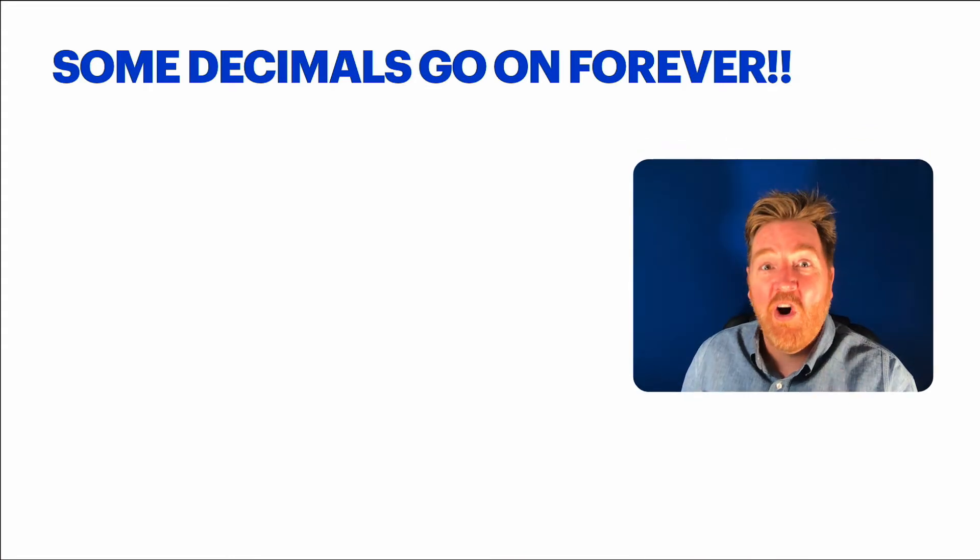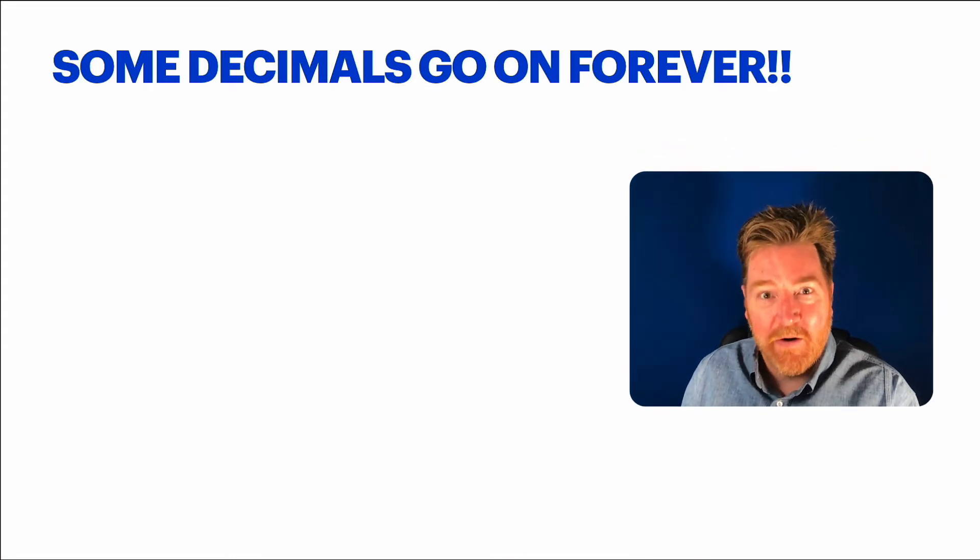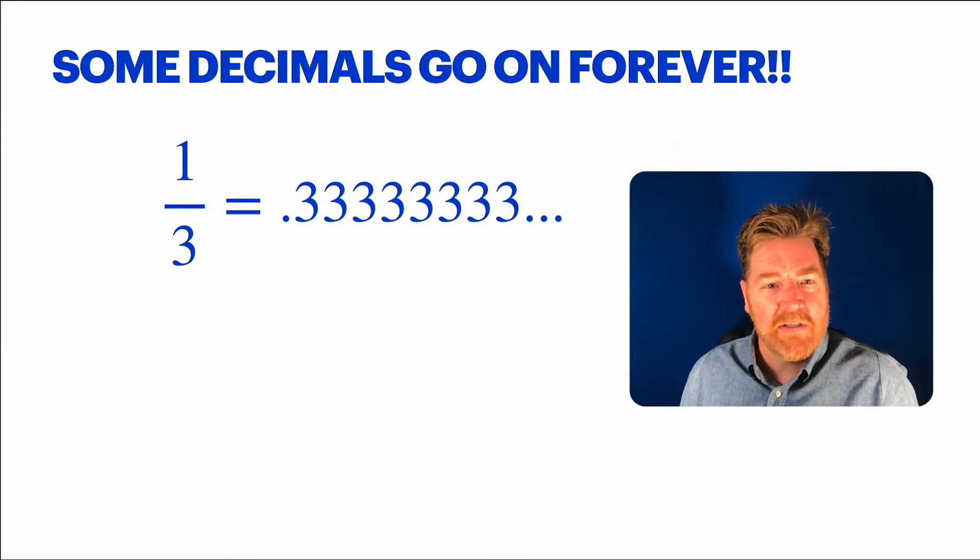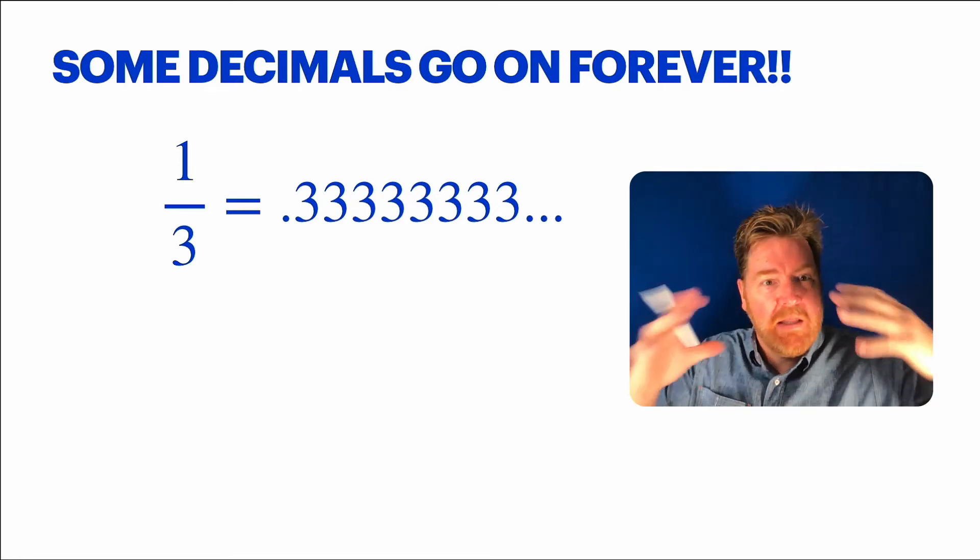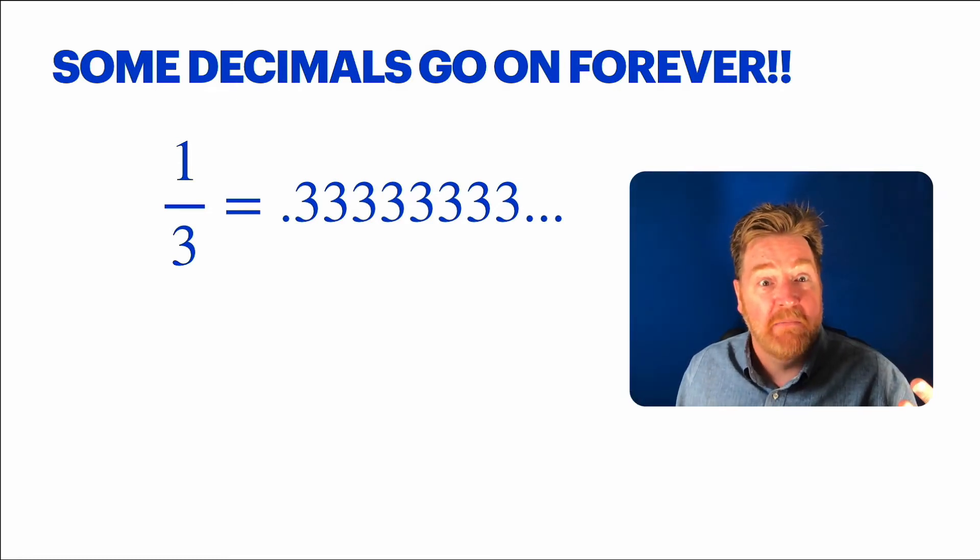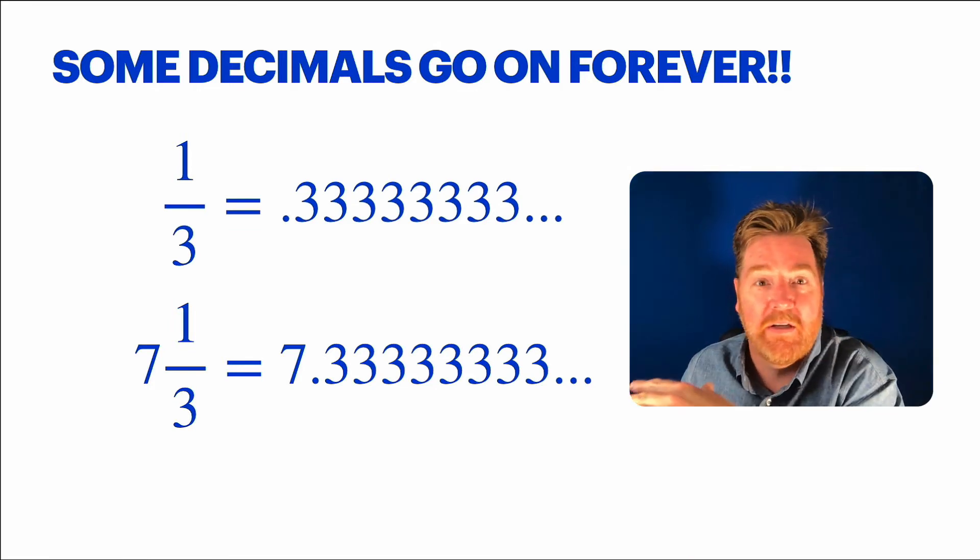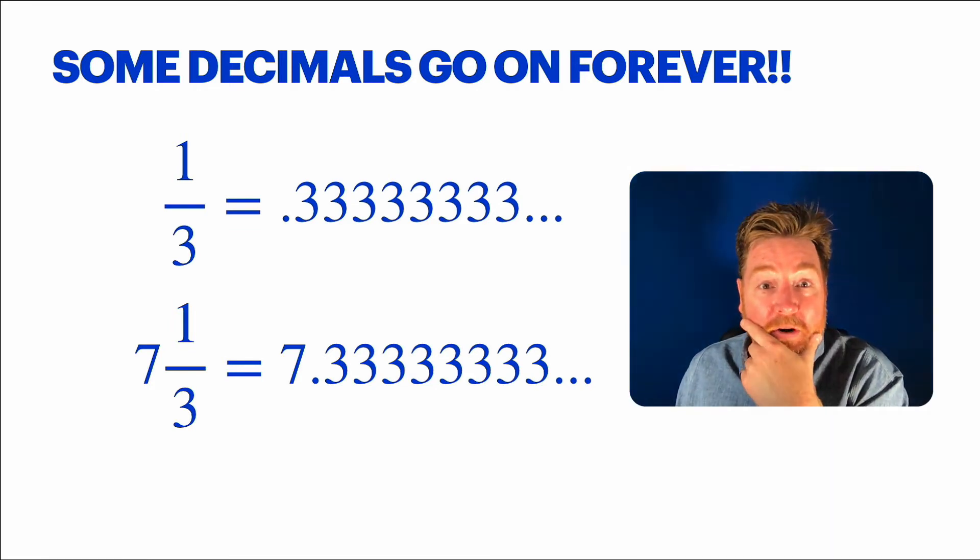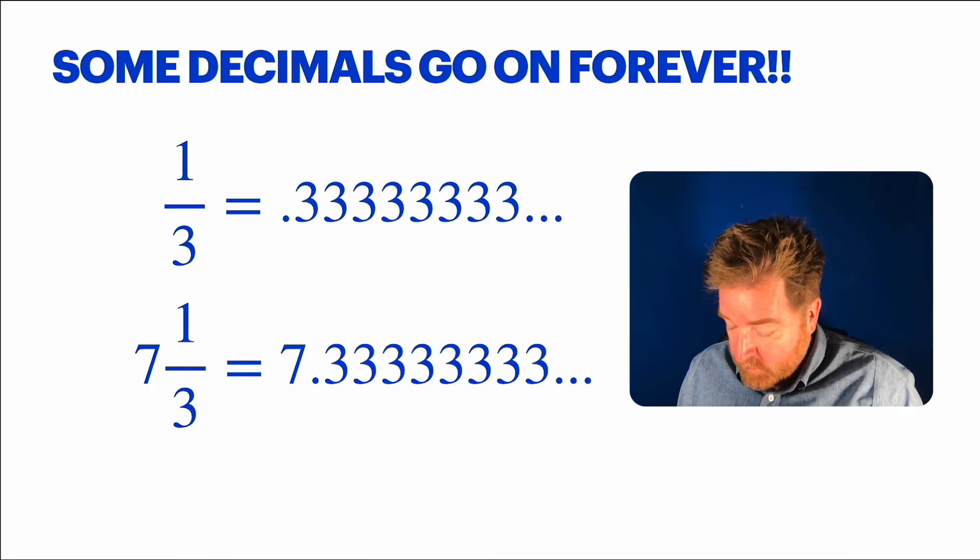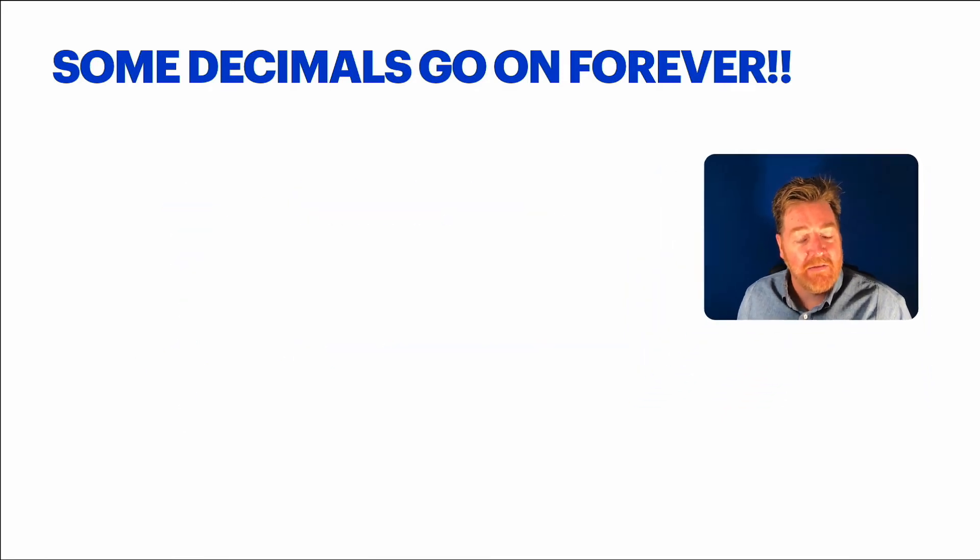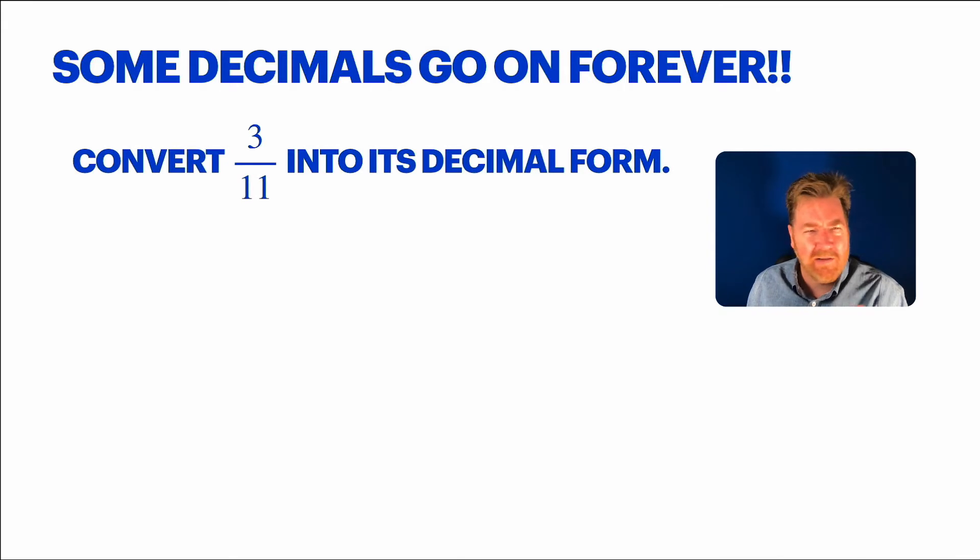Some decimals go on forever. This 1/3 thing is so bizarre. But man, that's going to be all over the place then. Because, like, we've got 7 and 1/3. That'll be 7.333333. This is weird. Man, are there a lot of these? Well, here, let's try this one. 3/11. Let's put it in its decimal form.